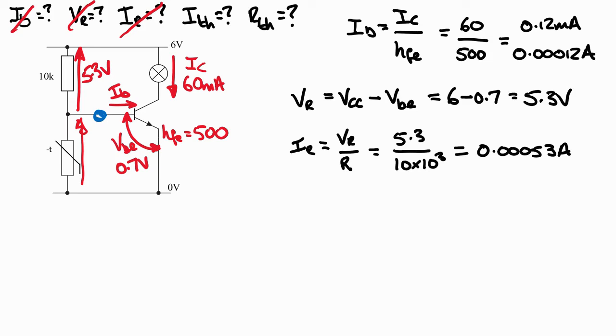We're addressing the current flowing through the thermistor. We need to use Kirchhoff's current law. We've already established the current flowing through the 10k resistor is 0.53 milliamps, and that current is being supplied to both the thermistor and branches off to feed into the base of the transistor. That current feeds to the node where the junction is and splits off into IB and the thermistor current Ith.